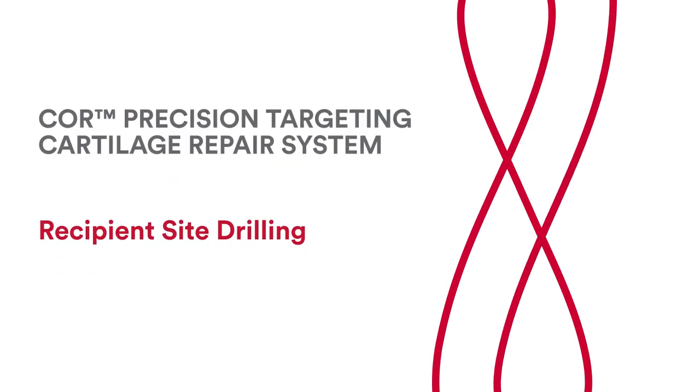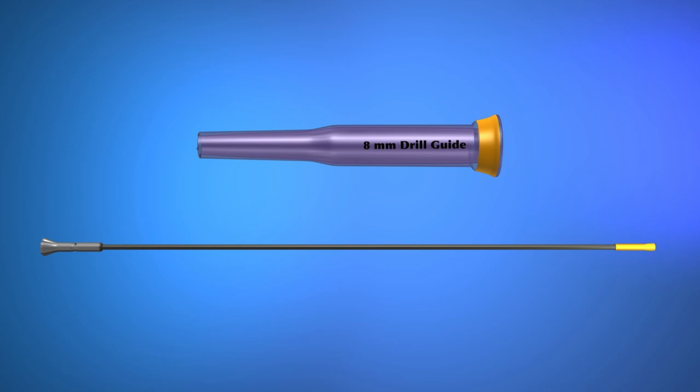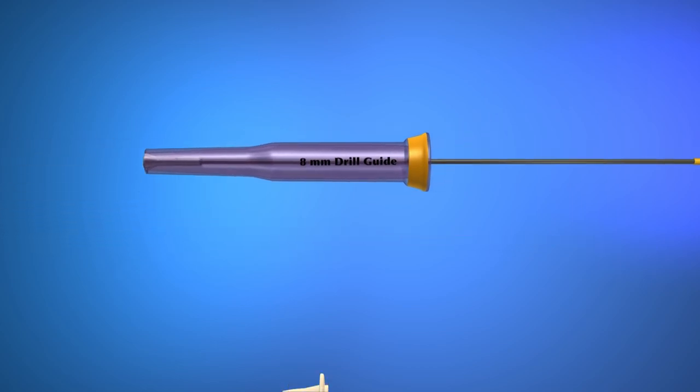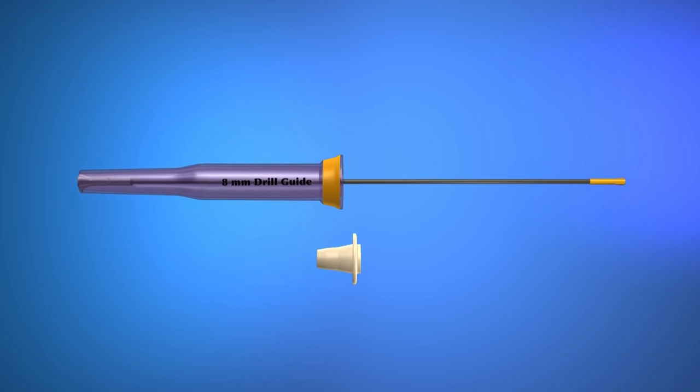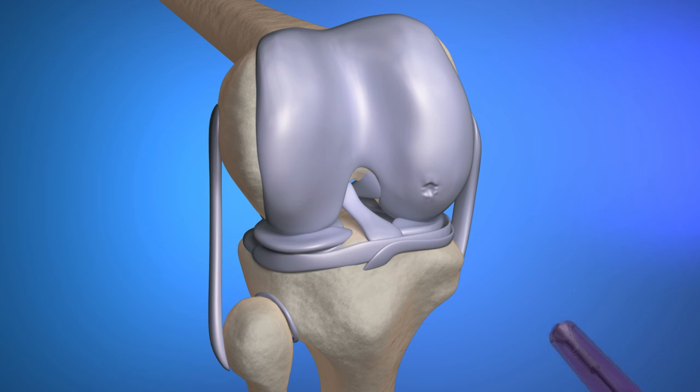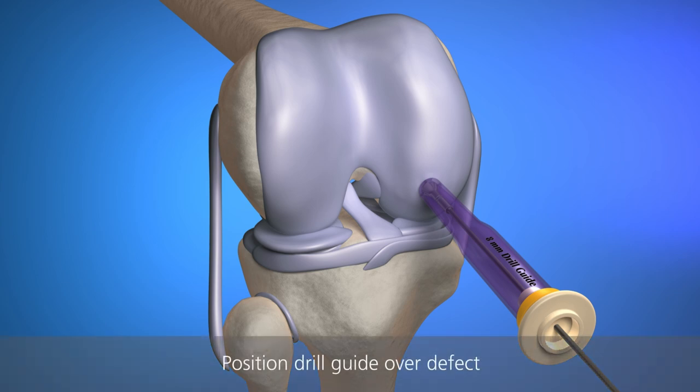Recipient Site Drilling. Insert the perpendicularity rod into the distal end of the drill guide and attach the perpendicularity rod cap to the proximal end. Use of the rod cap is optional. Insert the drill guide and perpendicularity rod assembly into the knee. Position the drill guide on the defect site and remove the perpendicularity rod cap.